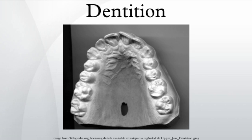In many mammals the infants have a set of teeth that fall out and are replaced by adult teeth. These are called deciduous teeth, primary teeth, baby teeth, or milk teeth. Animals that have two sets of teeth, one followed by the other, are said to be diphyodont. Normally the dental formula for milk teeth is the same as for adult teeth except that the molars are missing.